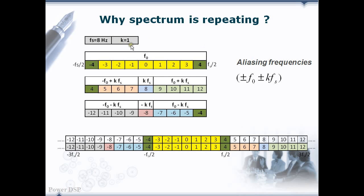Frequency components 9/8 and minus 7/8 are aliasing components for 1/8. Frequency components 10/8 and minus 6/8 are aliasing components for 2/8. Frequency components 8/8 and minus 8/8 are aliasing components for 0/8, which is a DC component. On the negative side, frequency components 7/8 and minus 9/8, and also 6/8 and minus 10/8, are aliasing components.